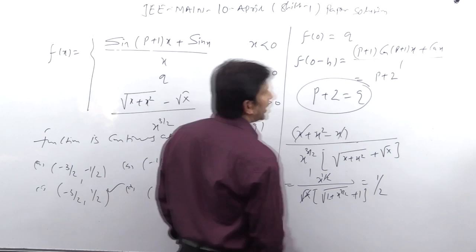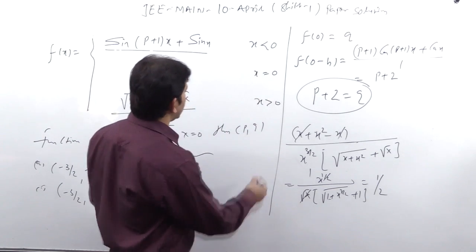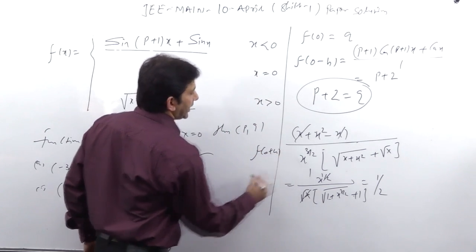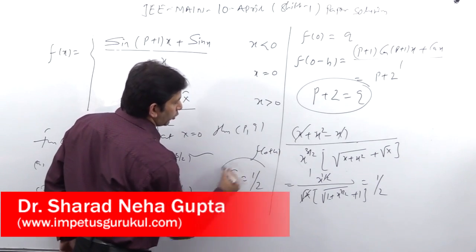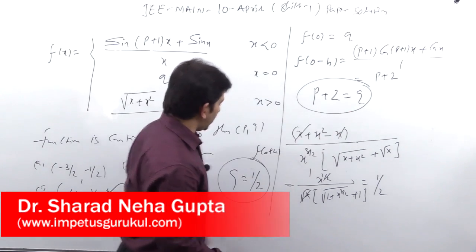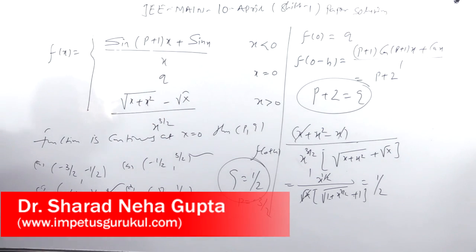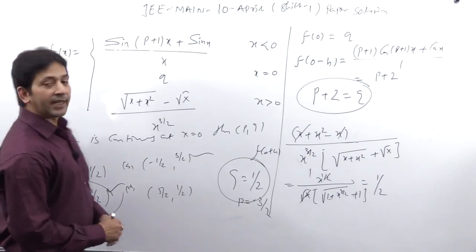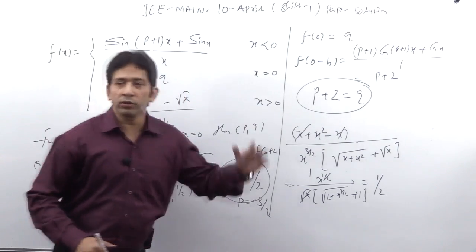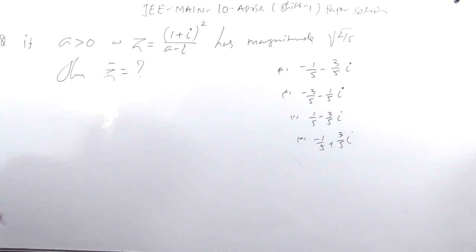This cancel 1 upon 0 rakh diya to ye ho gaya 1 upon. Ab isko compare kar sakte hai, Q ki value aana chahiye 1 by 2, P ki value aana chahiye minus 3 by 2. This is the right answer. Question done, yes next question.